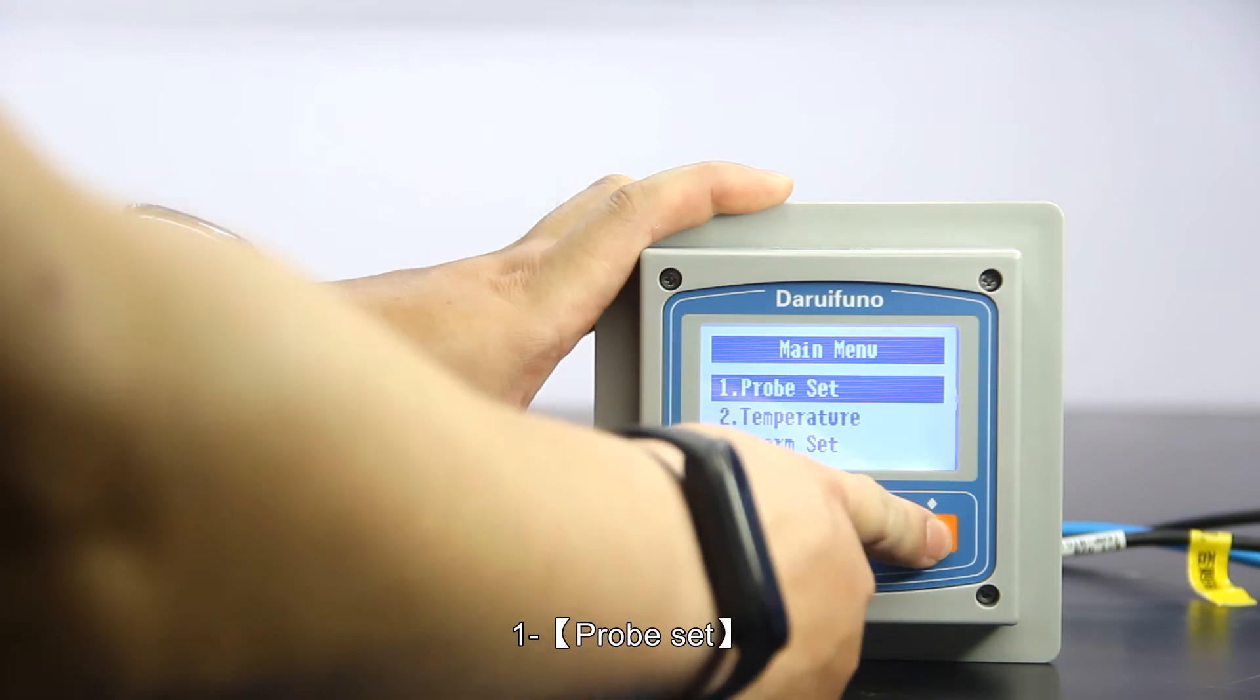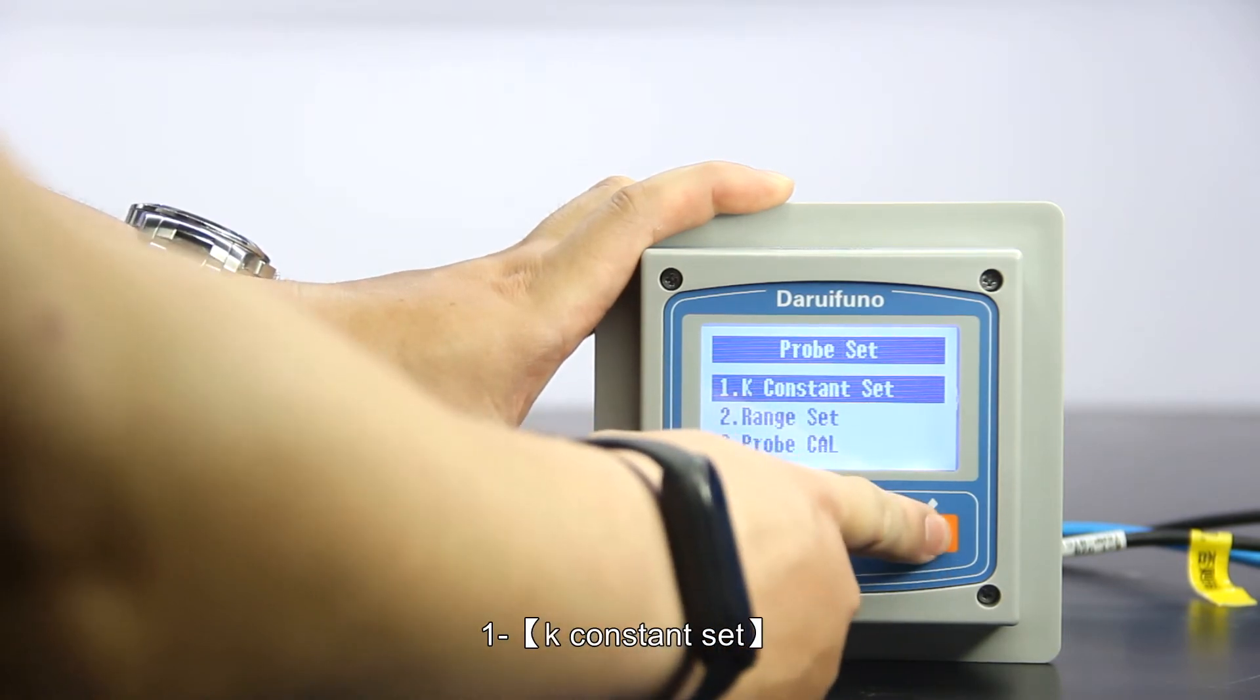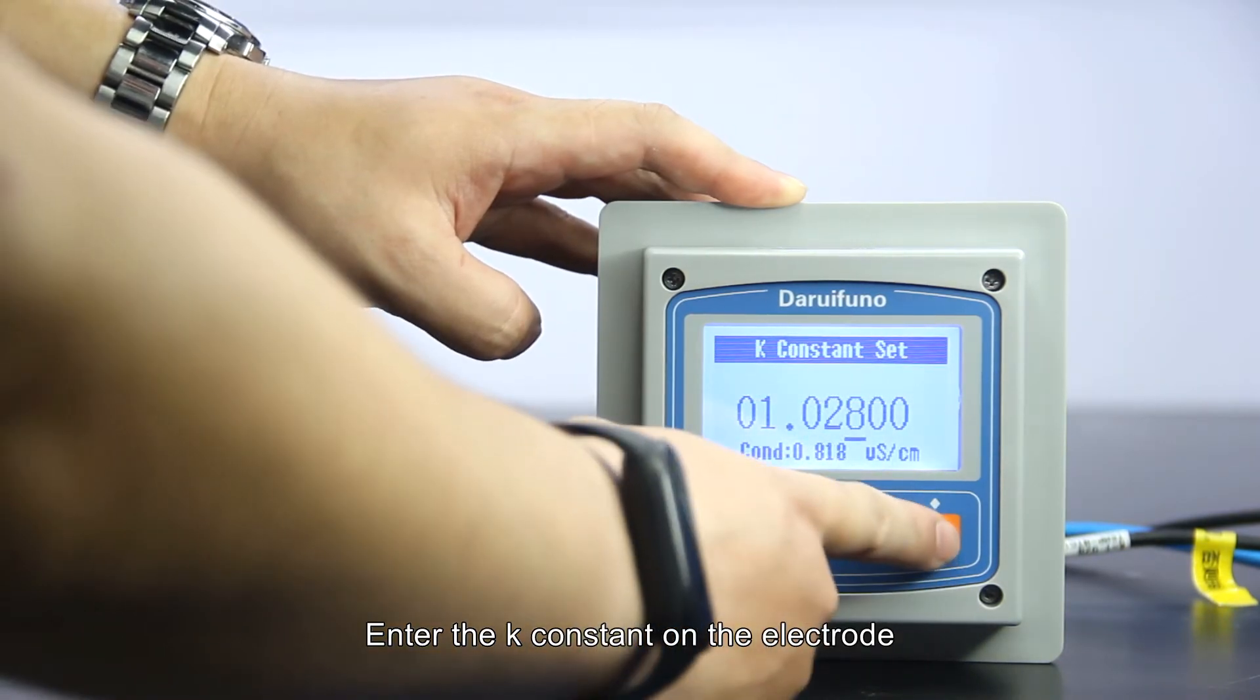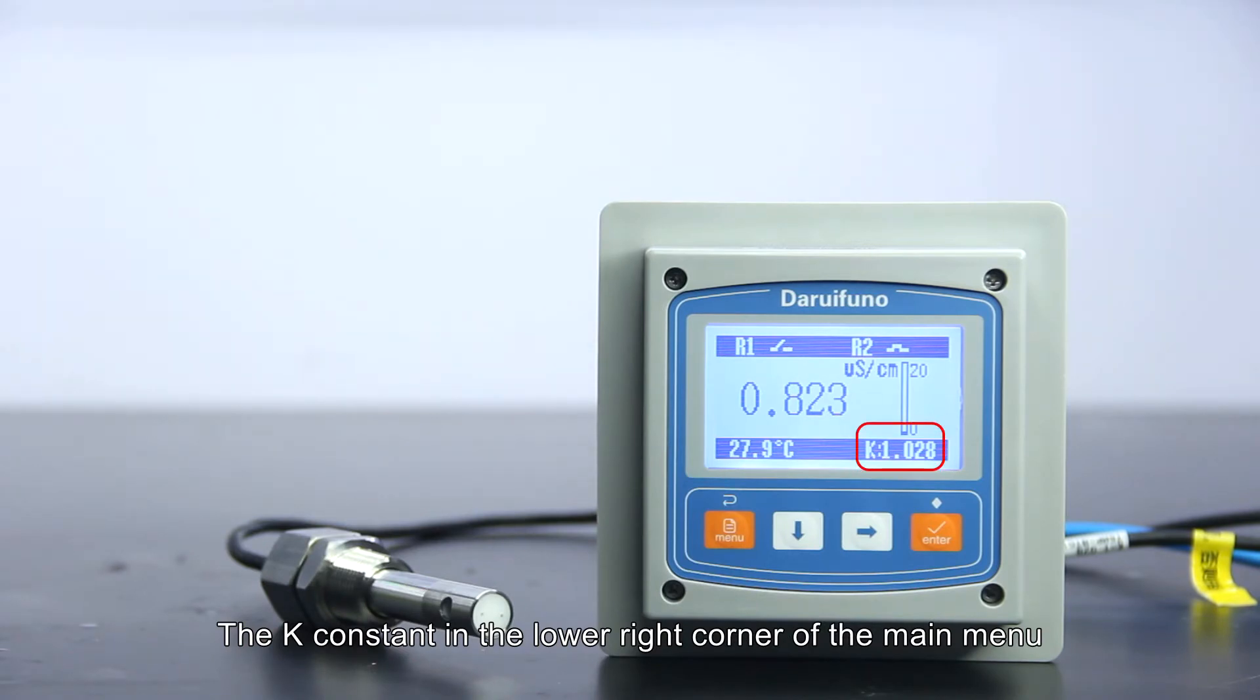Long press the menu key to enter. Select probe set, then K constant set. Enter the K constant on the electrode. The K constant in the lower right corner of the main menu will be replaced with the value you set.